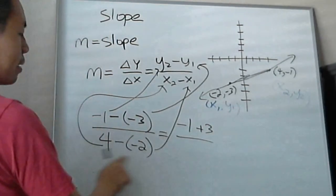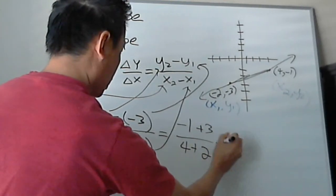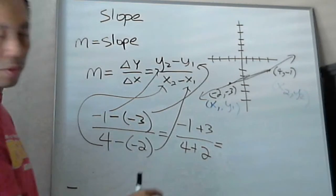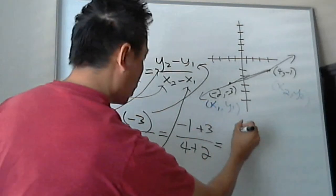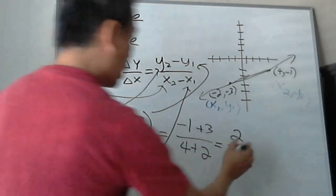All over 4 minus the negative 2. Plus plus again, right? So plus 2. And then negative 1 plus 3, so that would be 2. Over 4 plus 2 is equal to 6.